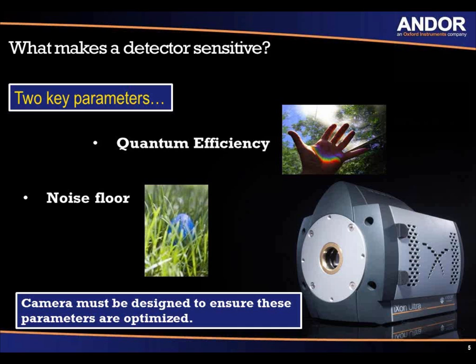On the spec sheet, you can see read noise at various readout speeds. The dark noise is dependent on temperature — if you cool your camera to minus 80 or minus 100 degrees, you can basically remove the dark noise. The cooling power of a camera dampens down this dark noise. All EMCCD cameras can be air-cooled to minus 80, and with water cooling, they can reach minus 100, effectively removing the dark noise.